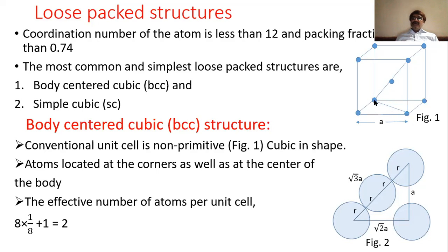A diagonal of the base is shown. If the lattice parameter is a, this side is a, this side is a, and the angle is 90 degrees. Applying Pythagoras theorem, the face diagonal is √2·a. Then the body diagonal is √((√2·a)² + a²) = √(3a²) = √3·a. So the length of the body diagonal is √3·a.